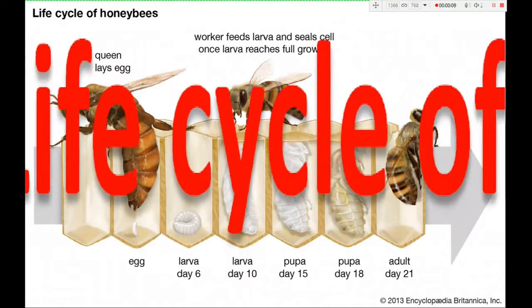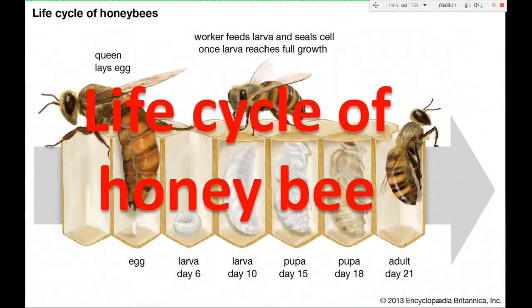Life cycle of honeybee. The life cycle of the honeybee is completed through egg, larva, pupa, and adult. The process is called metamorphosis.